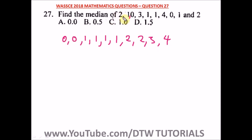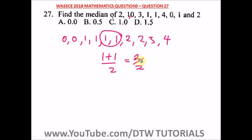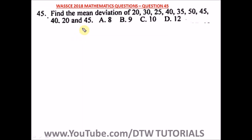We have 10 values total, which is an even number, so we pick the two middle numbers and divide by 2. We have 4 values on each side, so the two middle numbers are both 1. Therefore 1 plus 1 divided by 2 equals 1. Our median is 1, and the correct option is option C.